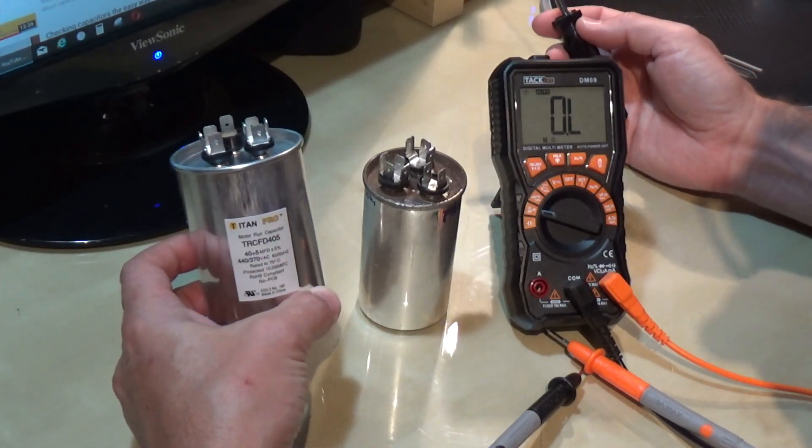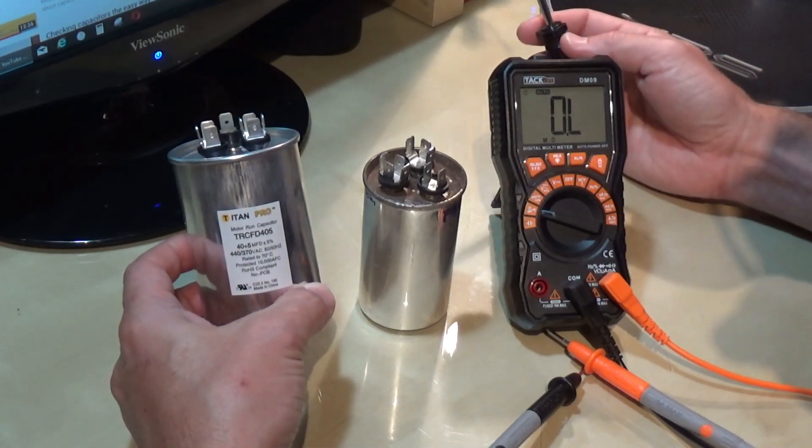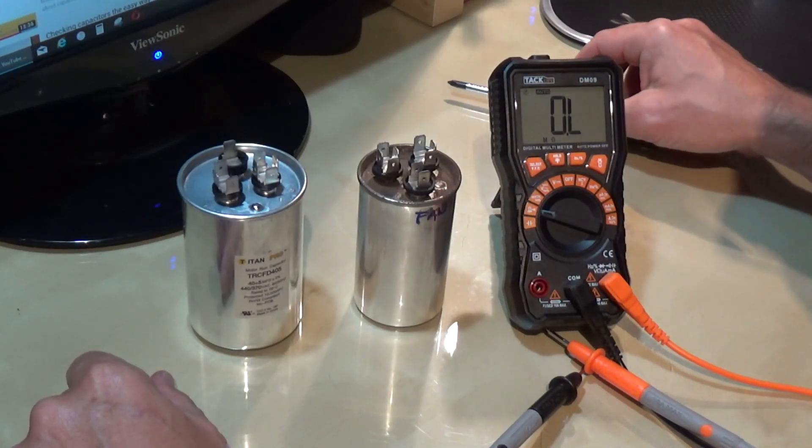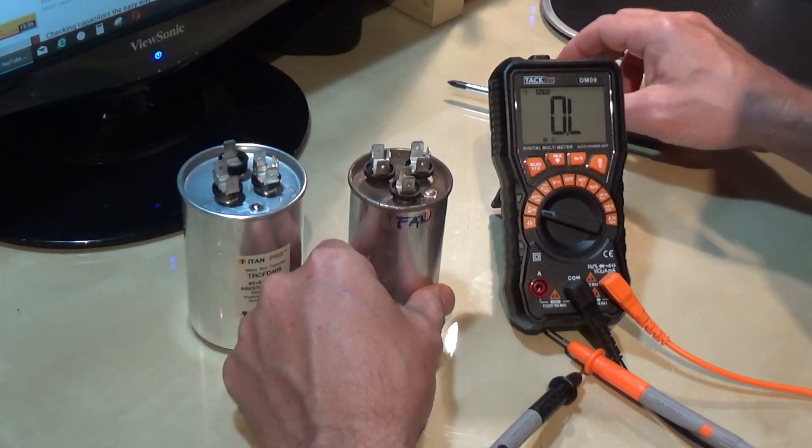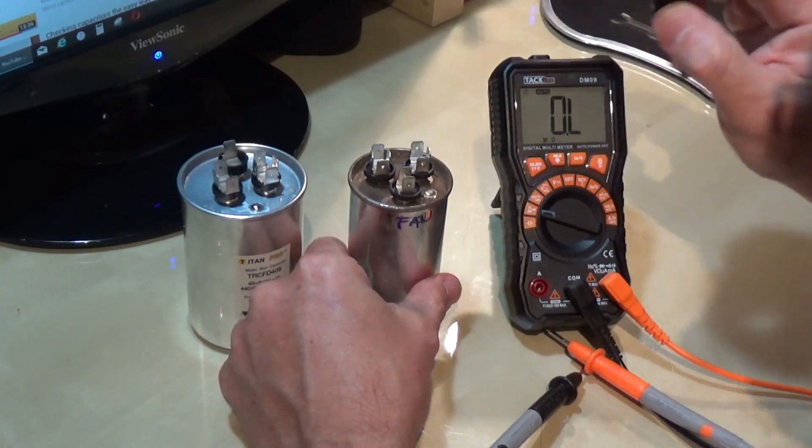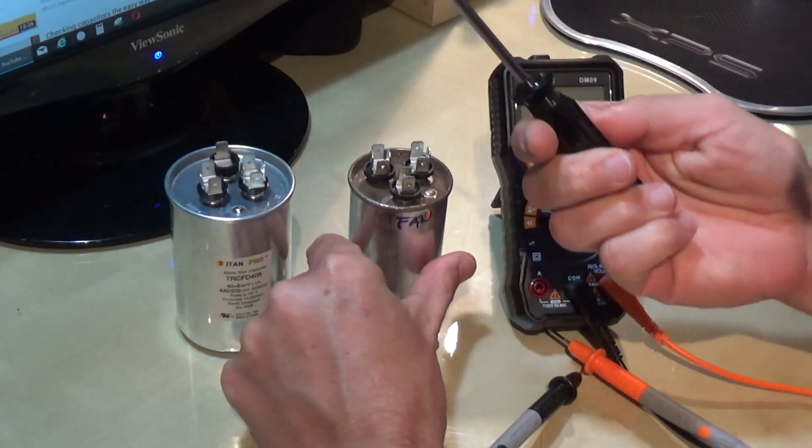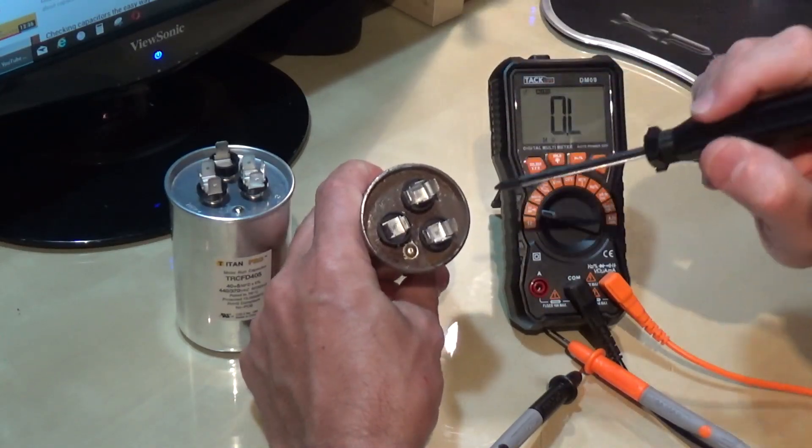I'm going to keep it just in case the one I have dies. To check your round capacitor, first you need to take it out of the system, and always, always discharge your capacitors. I'm using a screwdriver.